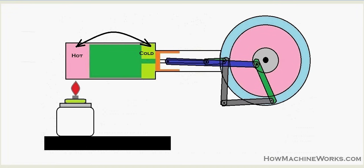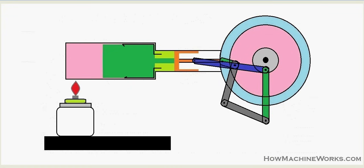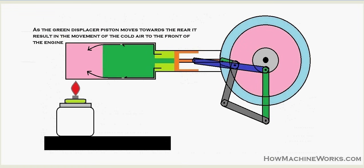In the colder region the air compresses, and in the hotter region it expands. As the air expands when heated, it creates pressure on the displacer piston, causing it to move from the left side towards the right side. You can see the green displacer piston moves back due to the expansion of the hot air. The colder air then moves towards the left side through sections at the top and bottom between the cylinder and the displacer piston.